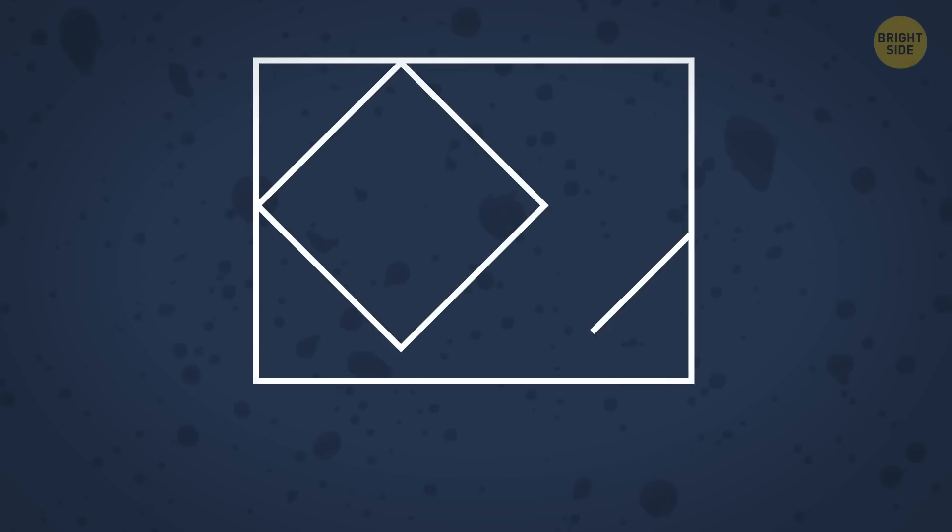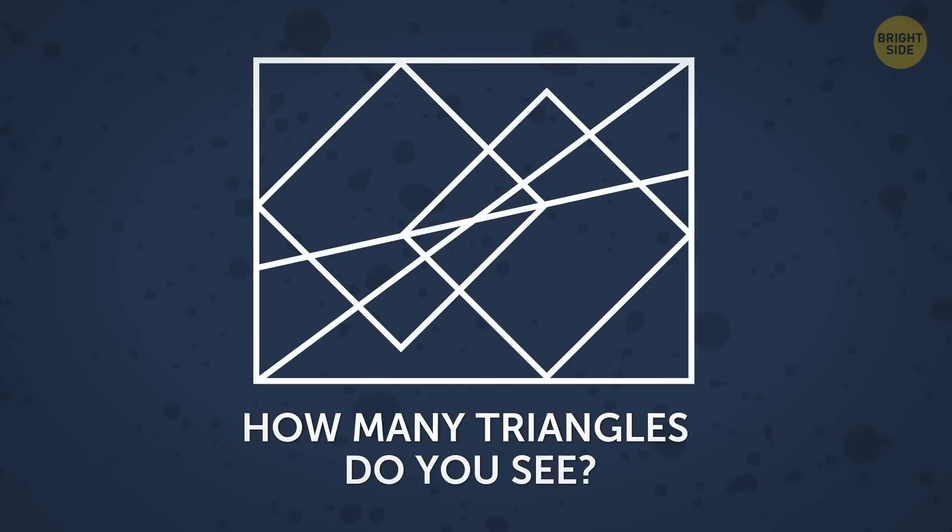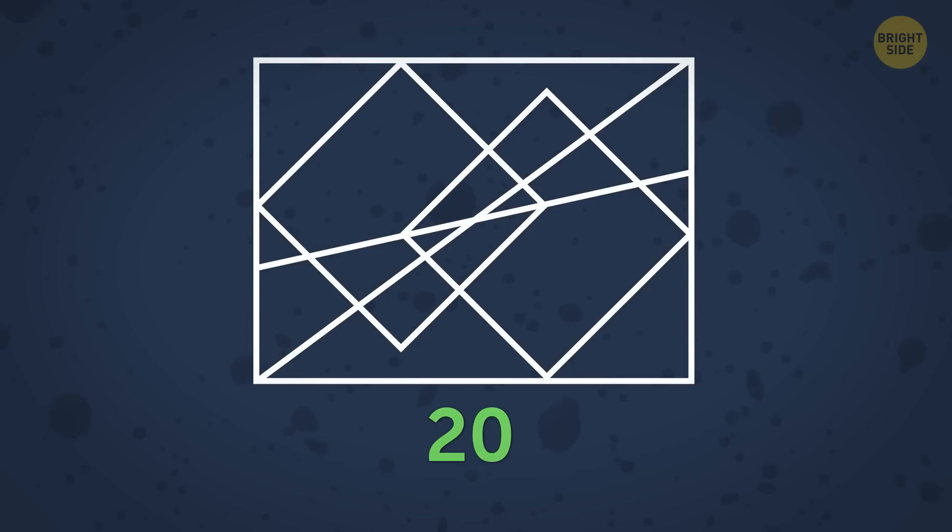Let's go ahead and crack some geometric puzzles. How many triangles do you see in the picture puzzle below? The correct answer is 20.